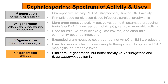The fourth generation cephalosporins — and there is really only one example used clinically, called cefepime — has a spectrum similar to the third generation cephalosporins, but with better activity versus Pseudomonas aeruginosa and the Enterobacteriaceae family.